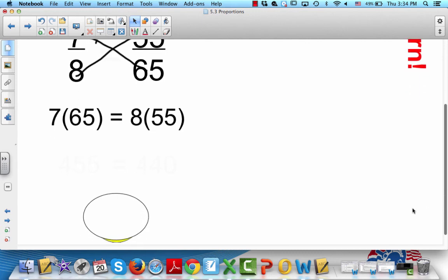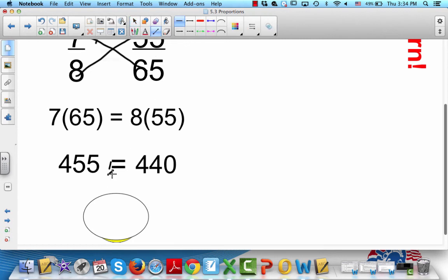I bet we've got another one down here. 7 times 65 is 455. 8 times 55 is 440. Are those equal? Why, of course not. They are not equal. And so if they're not equal, that means that we're not happy.